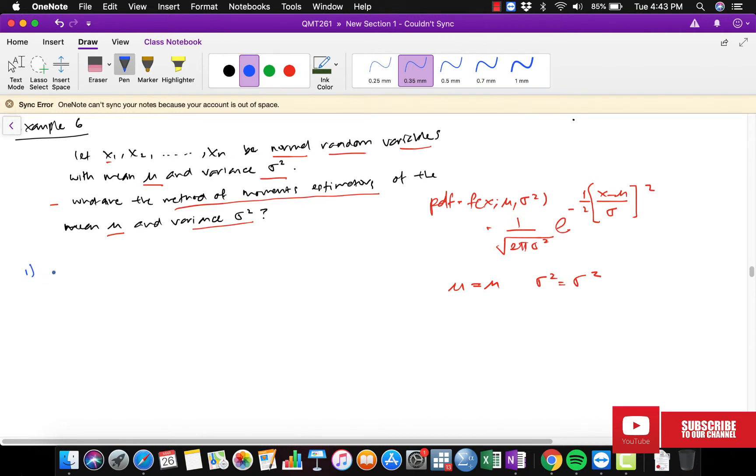The mean for normal is mu and the variance for normal is sigma squared. To solve this, first we need to have the theoretical moment about the origin.